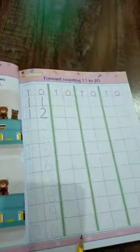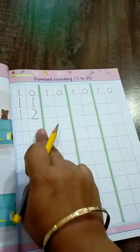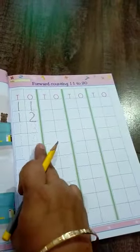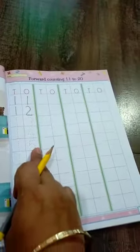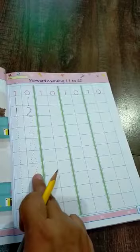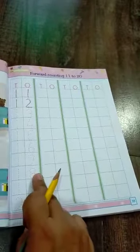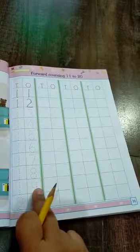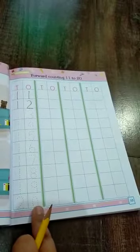Now 1, 3, 13, 1, 4, 14, 1, 5, 15, 1, 6, 16, 1, 7, 17, 1, 8, 18, 1, 9, 19, 2, 0, 20.